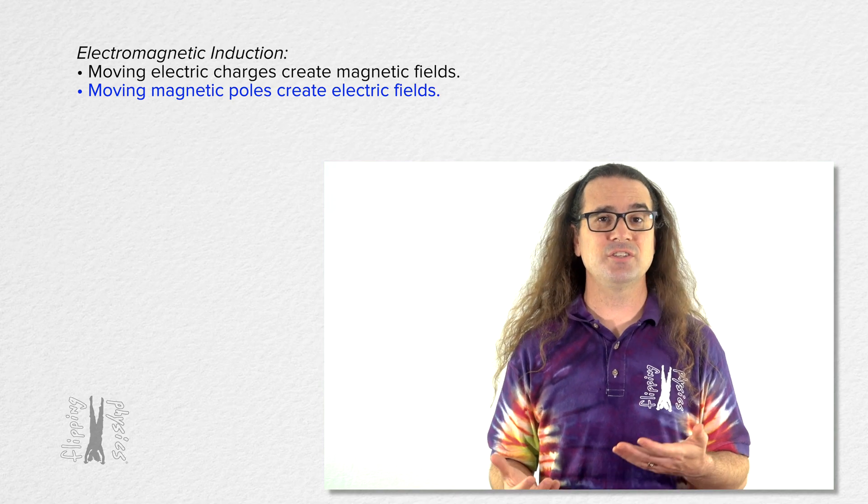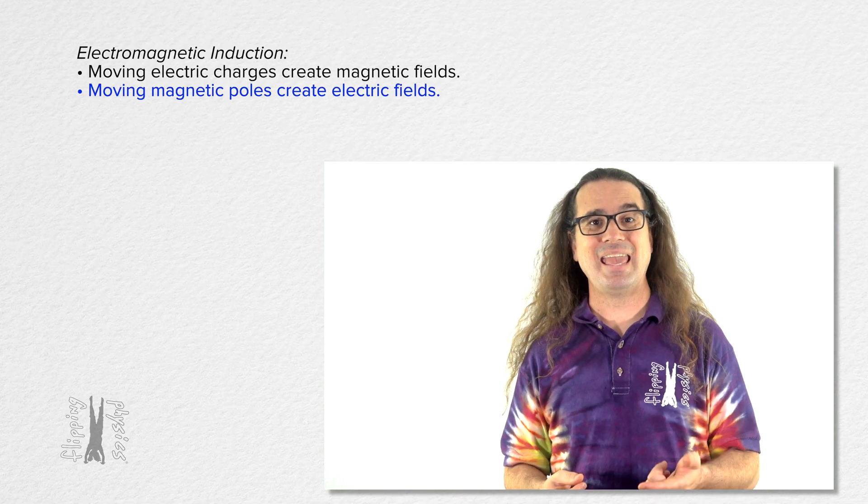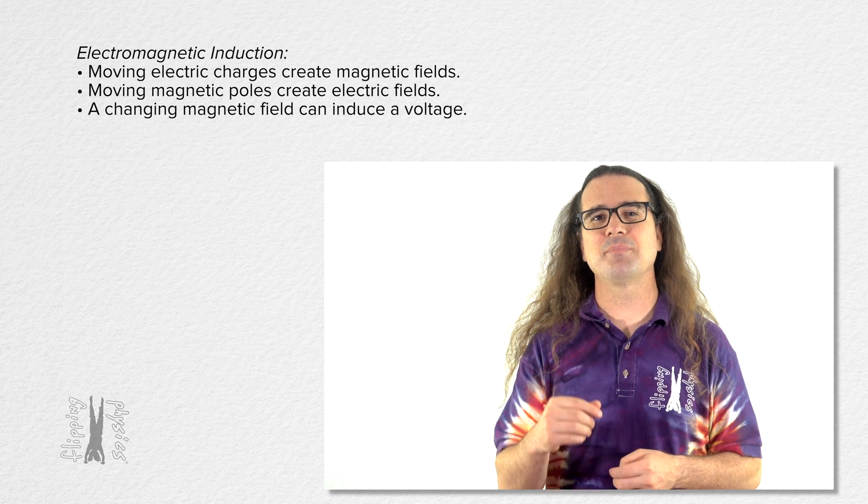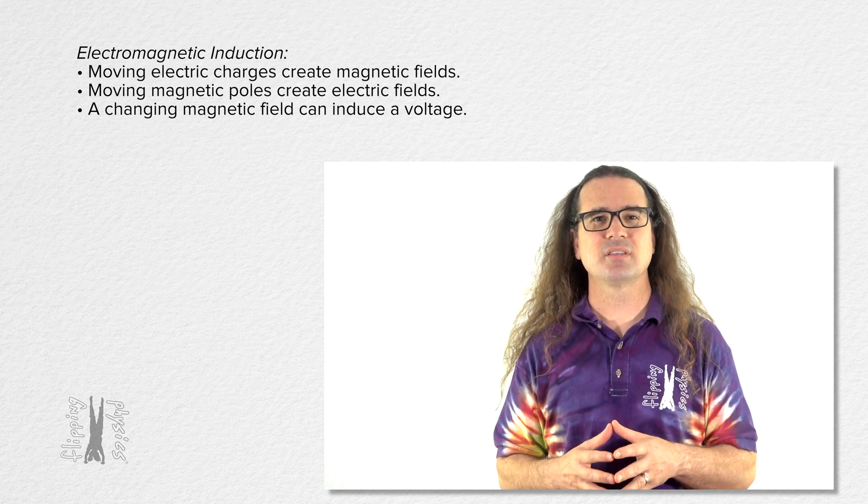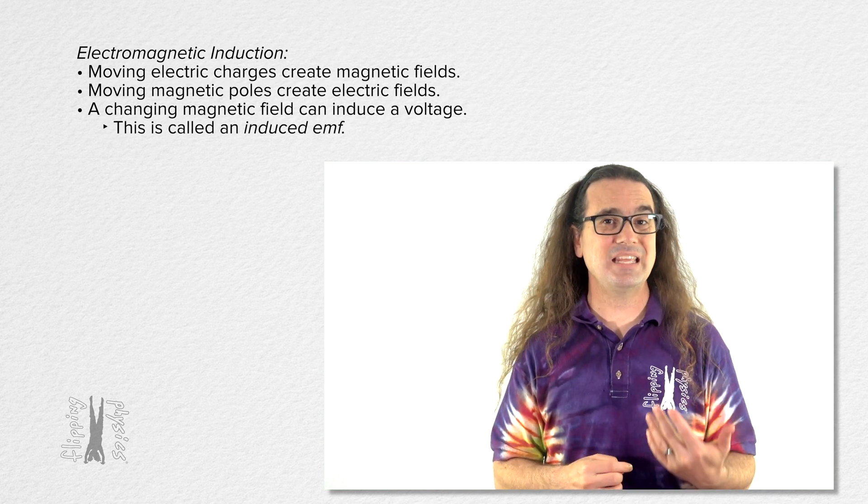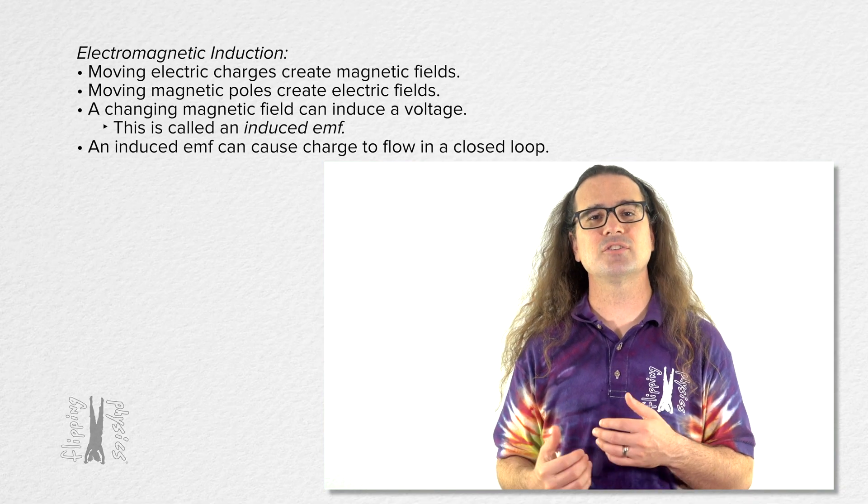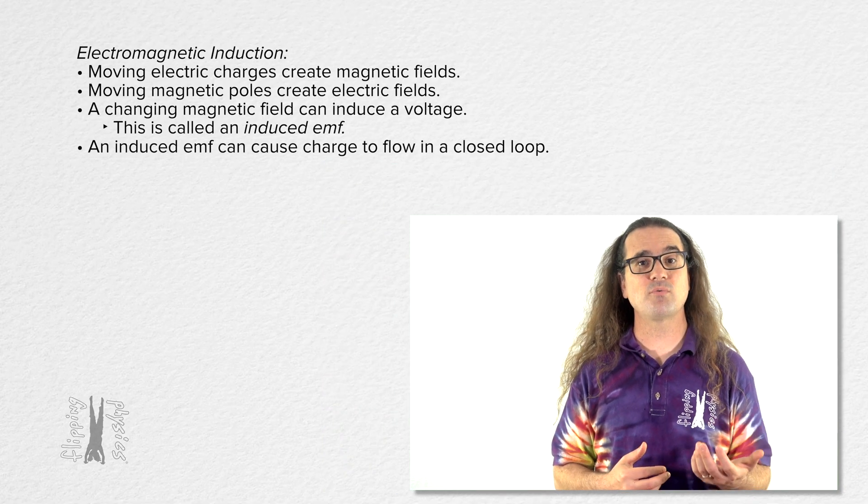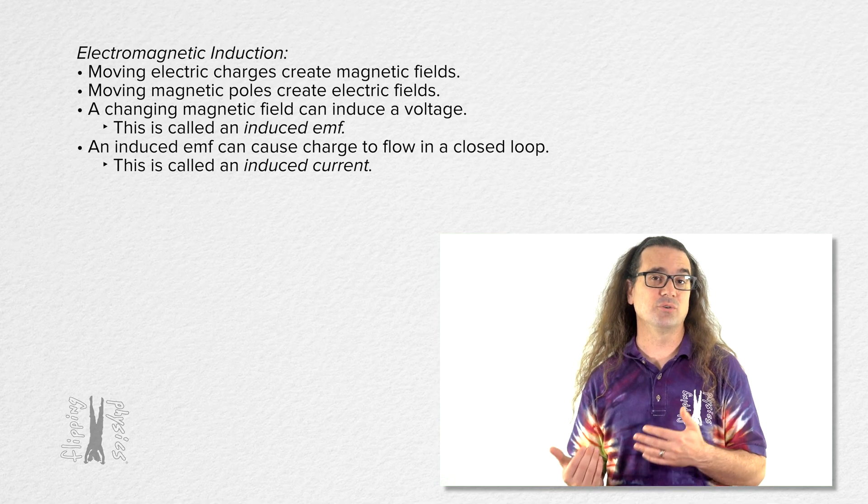When a magnetic field changes over time, this can induce the same outcome as an electric potential difference, and it is called an induced EMF. An induced EMF can cause charge to flow in a closed loop of wire, which is called an induced current.